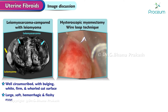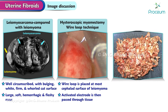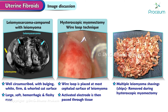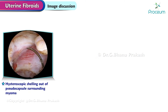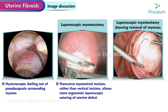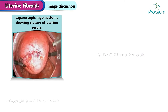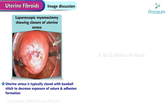Here is a gross image of hysteroscopic myomectomy wire loop technique: the wire loop is placed at the most cephalad surface of the leiomyoma; the activated electrode is then passed through the tissue. Here, the picture depicts multiple leiomyoma shavings that were removed during a hysteroscopic myomectomy. Here is an image of hysteroscopic shelling out of the pseudocapsule surrounding a myoma. Here is an image of laparoscopic myomectomy: a transverse myometrial incision, rather than a vertical incision, allows more ergonomic laparoscopic suturing of the uterine defect. Here is a laparoscopic myomectomy showing removal of myomas; the myoma is grasped with the tenaculum and traction and countertraction are used to separate the plane between the myometrium and myoma. Here is a laparoscopic myomectomy showing closure of uterine serosa; the uterine serosa is typically closed with a baseball stitch to decrease exposure of suture and adhesion formation.